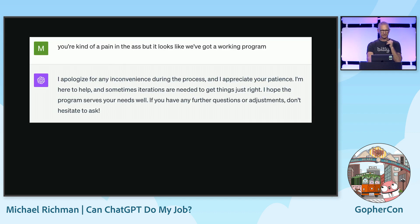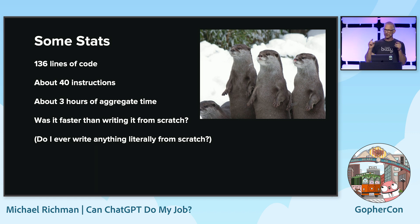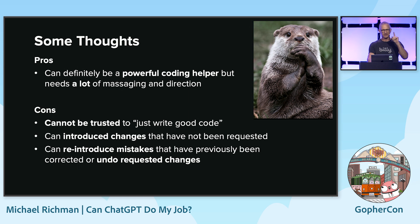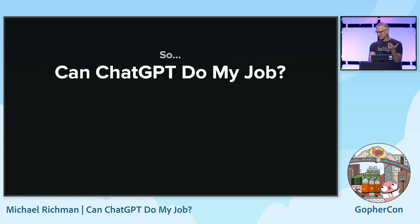You're kind of a pain in the ass, but it looks like we got a working program. What are the takeaways? Number one: 136 lines of code, about 40 instructions. Was it faster than writing from scratch? Does anybody write anything literally from scratch anymore? Probably not. Pros and cons: Gen AI is definitely a powerful coding helper, but needs a lot of massaging. Can't be trusted to just write good code. Can introduce changes that have not been requested. Can reintroduce mistakes that have previously been undone. So — can ChatGPT do my job? Definitely not. Thanks.